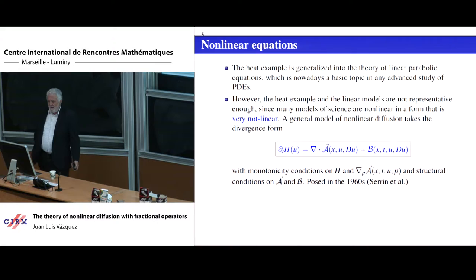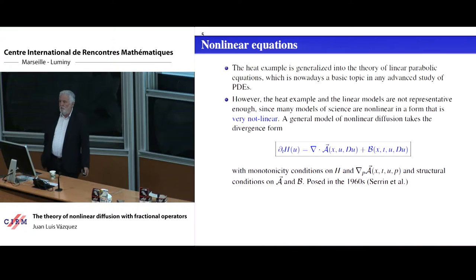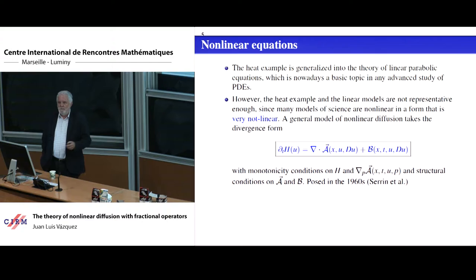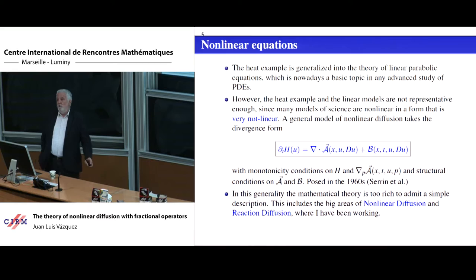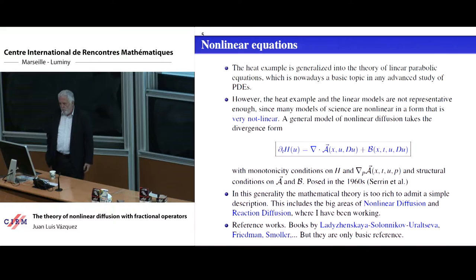In the 1960s, nonlinear functional analysis was very strong after the work of De Giorgi, Moser, Nash, et cetera. They thought that in maybe 20 years they could write a book on all of that. It was not possible. When 20 more years went by, we discovered the only way to tackle the problem is writing books on every separate equation because it was too rich. We now know that hidden in this formulation are the Yamabe flow and the Ricci flow. So it's too rich, but nobody knew that at the time.